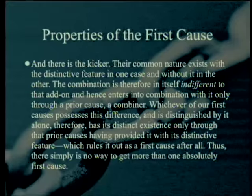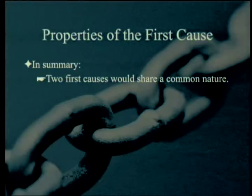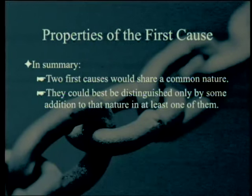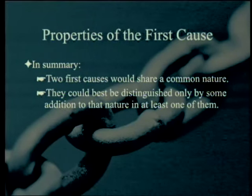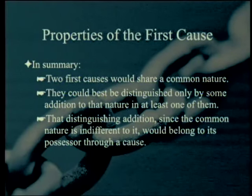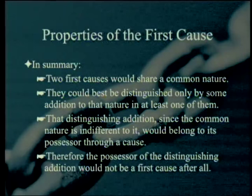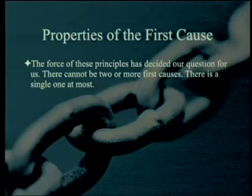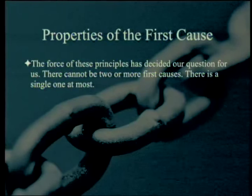Thus, there is simply no way to get more than one absolutely first cause. In summary: two first causes would share a common nature. They could best be distinguished only by some addition to that nature in at least one of them. That distinguishing addition, since the common nature is indifferent to it, would belong to its possessor through a cause. Therefore, the possessor of the distinguishing addition would not be a first cause after all. The force of these principles has decided our question: there cannot be two or more first causes. There is a single one, at most.